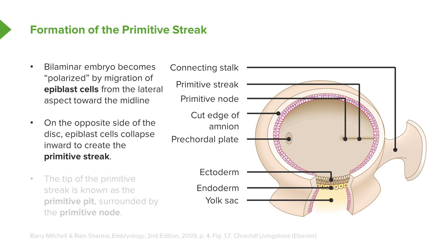On the more caudal side of the developing bilaminar embryo, a series of cells fold inward, creating a streak that moves closer and closer to the precordal plate. At the very tip of this streak is a structure called the primitive pit, and the cells located there are known as the primitive node.